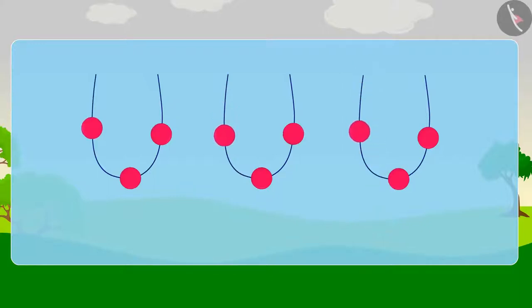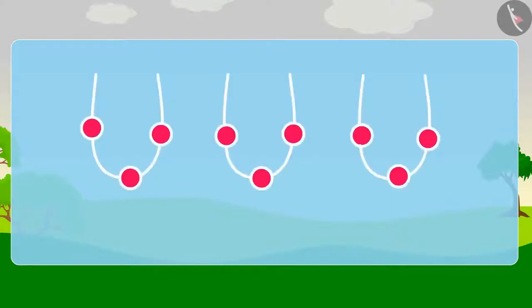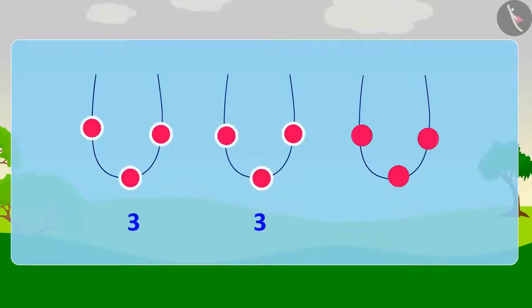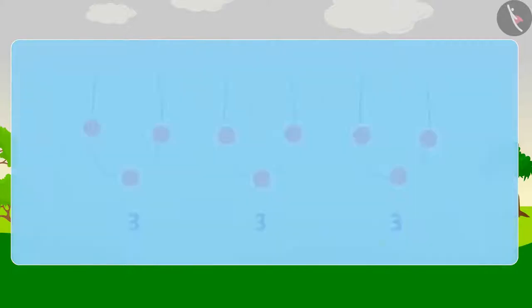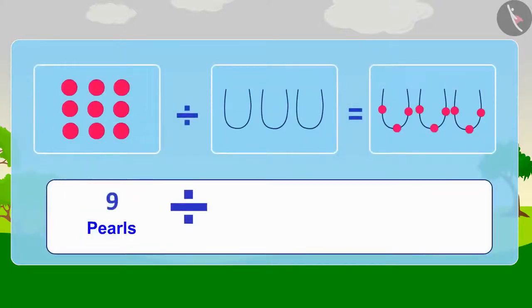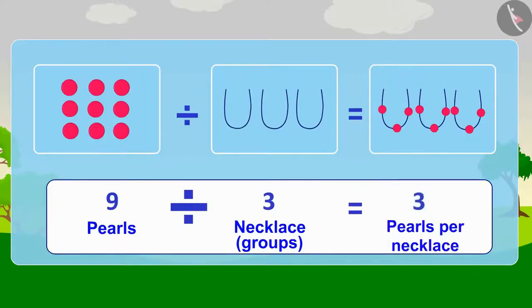Appu has no other pearls left and his 3 necklaces are ready. Each necklace has 3 pearls. In other words, Appu's 9 pearls were divided into 3 equal groups and each group had 3 pearls.